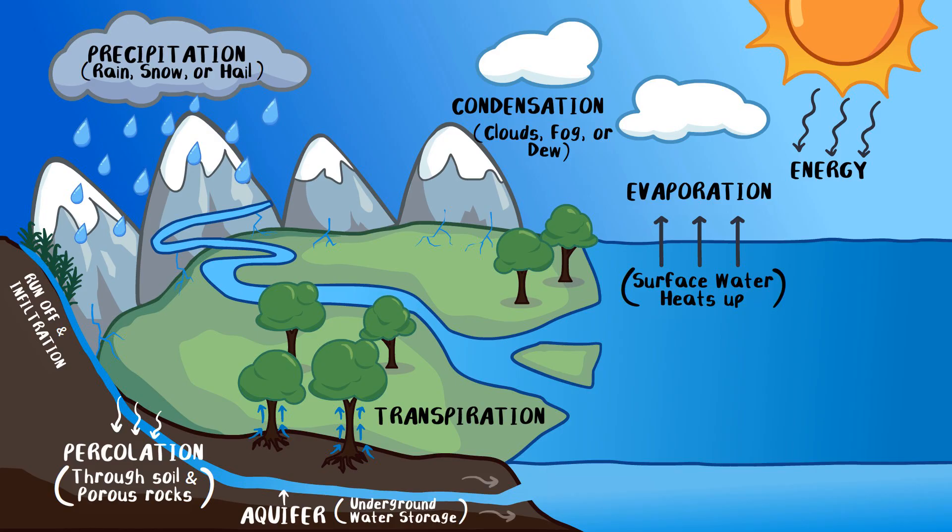This water can then make its way back out into the ocean, where the process of water cycling continues all over again. So we've just talked about what the water cycle is. Now let's talk about why the water cycle matters.